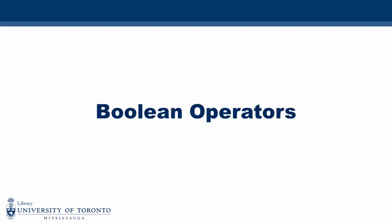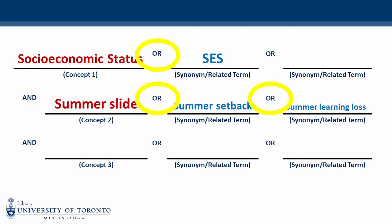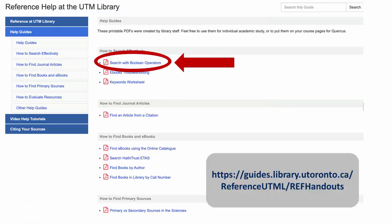It is very important that we enter our synonyms in the same row as our keywords because we're using the Boolean operators AND and OR. We use OR when we want to include synonyms or related terms in our search, such as SES for socioeconomic status, and summer setback and summer learning loss for summer slide. We use AND to connect two or more concepts, including their synonyms. For more information on Boolean operators, check out our help guides on the UTM Library Reference Help page.